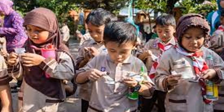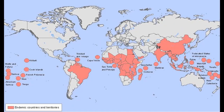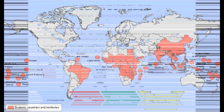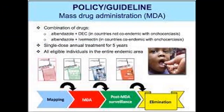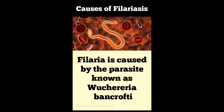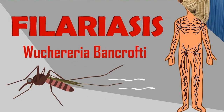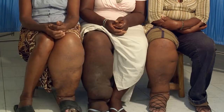Moreover, residual hotspots of transmission have been identified in some countries, including American Samoa and Ghana, after presumed interruption of transmission and cessation of MDA. More than 90% of cases of lymphatic filariasis are due to Wuchereria bancrofti, while the remainder is due largely to Brugia malayi. Estimates suggest that as many as 36 million infected individuals are seriously incapacitated and disfigured by lymphatic filariasis, and the chronic disability persists.